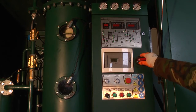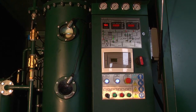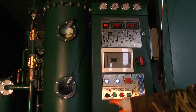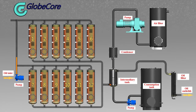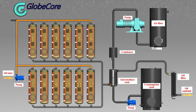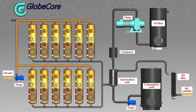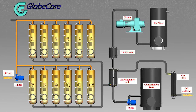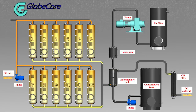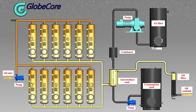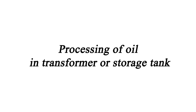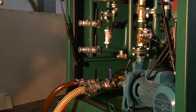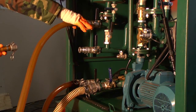When the system is started and regeneration begins, the input pump directs oil to the sorbent columns. Molecular oil filtration takes place in the columns. At this time, the oil color is improved. After regeneration, the oil flows to the intermediary tank and then to final polishing. For oil treatment in a transformer or a storage tank, the degasser is connected to the above and the regeneration unit is connected to the degasser.